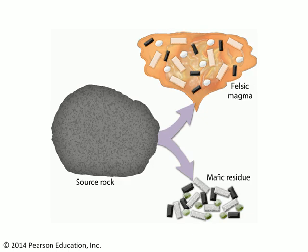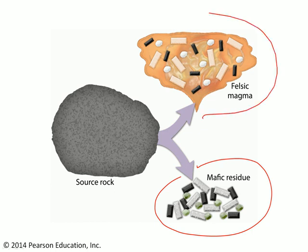The basic idea behind partial melting is this: you can have some original rock and then through the process of partial melting, you can separate that rock into two components. A solid residue that's going to have a composition that's more mafic — more iron and magnesium rich than the original source rock — and then also a magma, a melt, that is going to be more felsic or more silica rich than the original source rock.